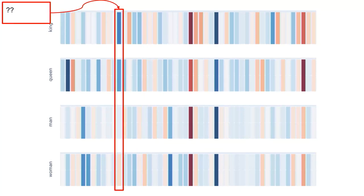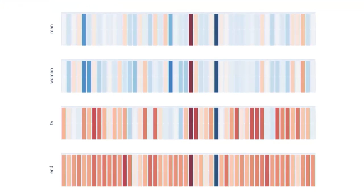Here we see values more intense for 'king' and 'queen' — what could that mean? The audience suggested 'crown'; I came up with royalty and power as well. Here I'm also showing words largely unrelated from each other — you can see 'woman' and 'end' are not related at all, and therefore their word vectors are very far apart from each other and look very different.